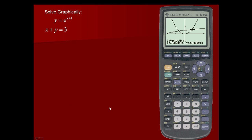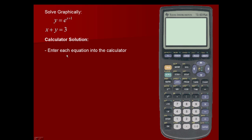Next, let's solve graphically the system of equations: y is equal to e raised to the x plus 1, and x plus y is equal to 3. I'll simply clear my calculator and go back to the home screen. We're going to enter each equation. I'll clear out y sub 1 and y sub 2, then enter e raised to the x plus 1 for y sub 1. For y sub 2, I have to solve the equation for y by transposing x, so y sub 2 is negative x plus 3. Next, I'm going to graph using zoom 6.